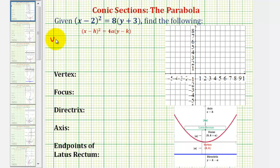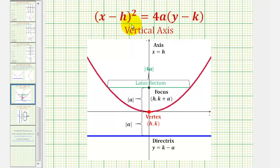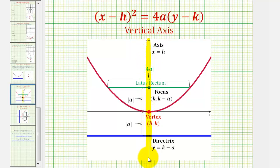We'll have a vertical axis. And before we find all the key characteristics of a parabola, let's do a quick review. If the x part of the equation is being squared, we have a vertical axis, or axis of symmetry, which in this case would be this vertical line here. The axis will have an equation of x equals h, which we can obtain from the equation.